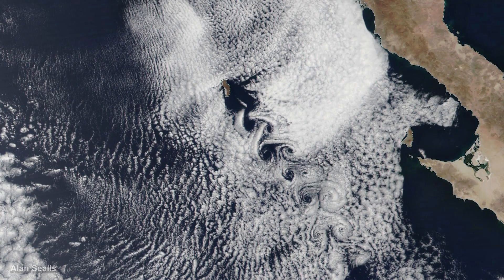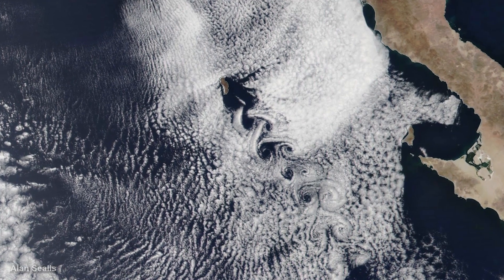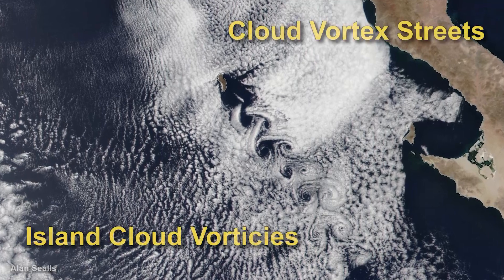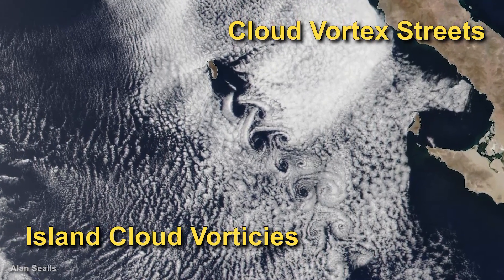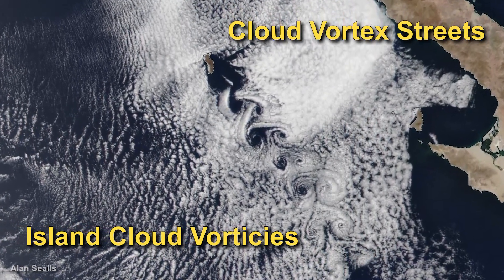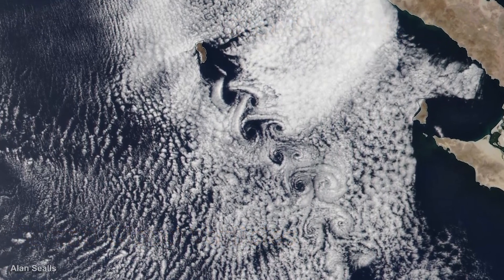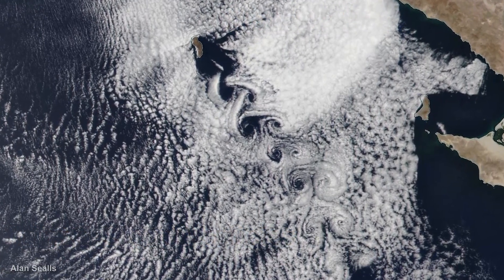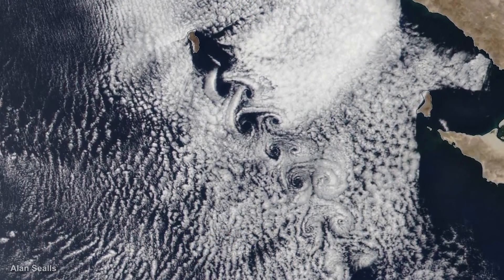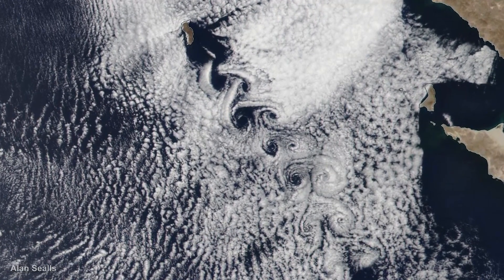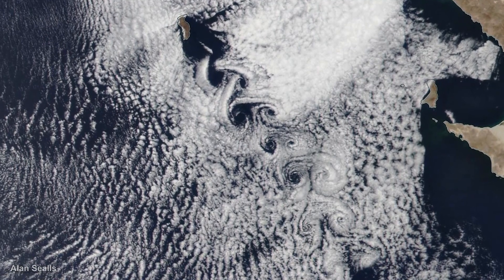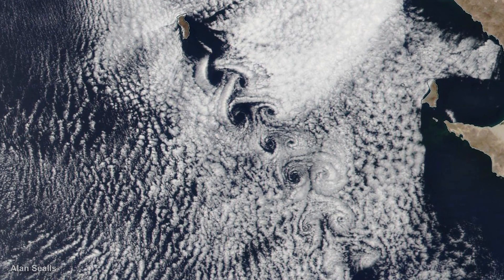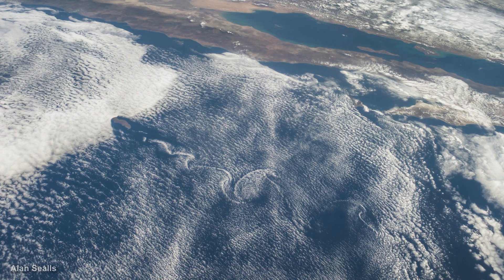These are called island cloud vortices, or cloud vortex streets. Each vortex does not spin fast enough for your eye to notice, but once it forms and is joined by others, the vortices can last for many hours as they slowly drift away from the island.